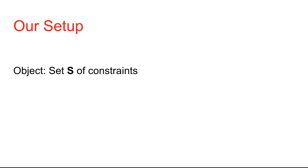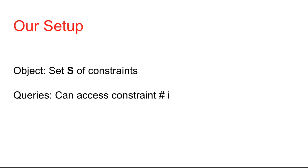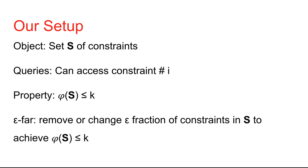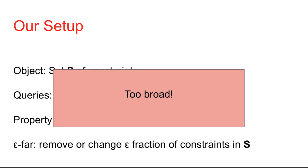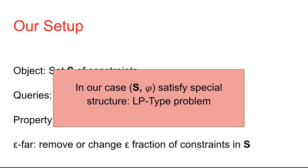Our setup in particular is the following. Our object is a set S of constraints. Our queries are: we can access the i-th constraint for any i. The property that we care about is whether phi of S is at most k, where phi is some function over the constraints S. For instance, phi is an objective function that we want to minimize subject to the constraints in S. By epsilon-far, we mean we have to remove or change an epsilon fraction of the constraints in S to achieve phi of S at most k. We look at the case where S and phi satisfy a special structure known as LP-type problems.